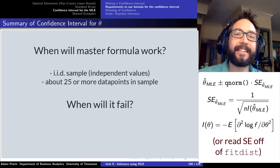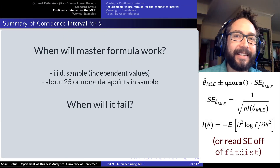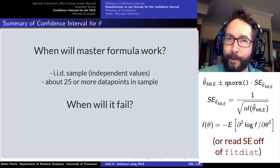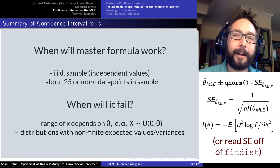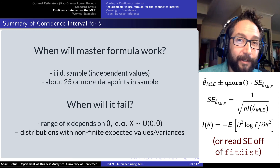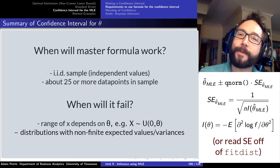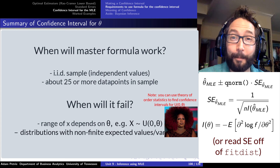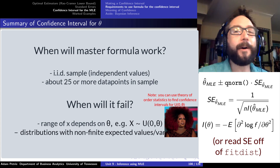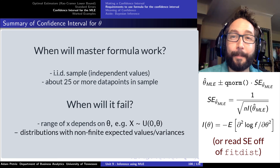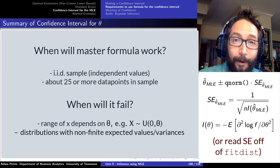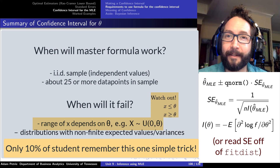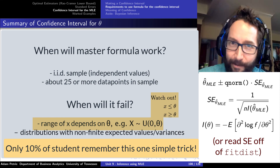One caveat: this master formula doesn't apply to every probability distribution. It won't apply when the parameter theta actually influences the range of values you might observe. For example, the uniform distribution between 0 and some upper bound theta — this formula doesn't work for a 95% confidence interval in that case. But for most distributions, as long as theta isn't tied to the possible values of X, you're fine. Just check your PDF definition — when X is tied to theta inside a range, you can't use this procedure.